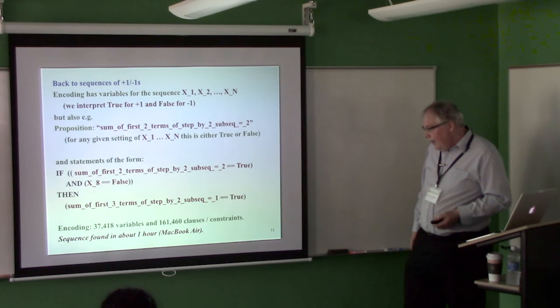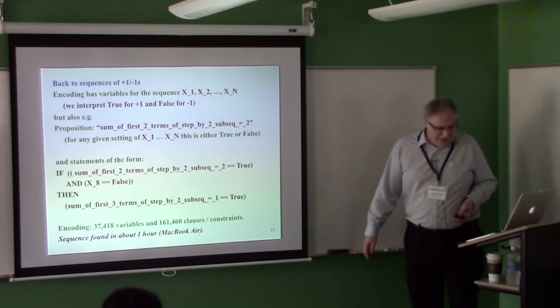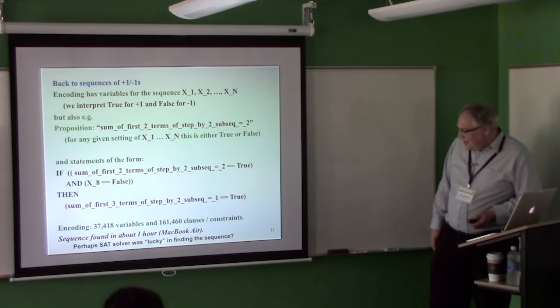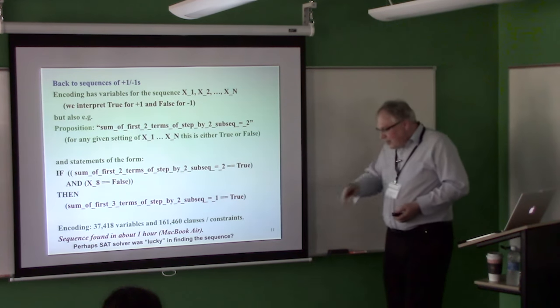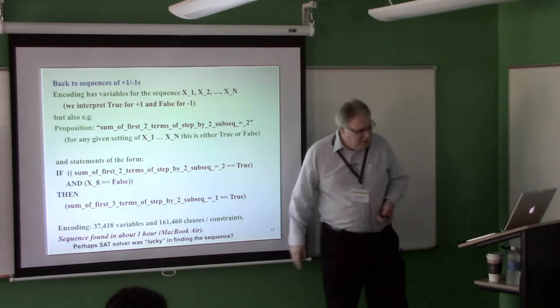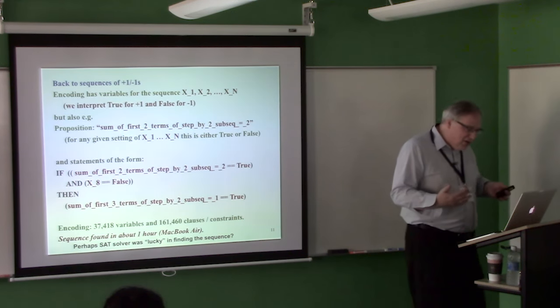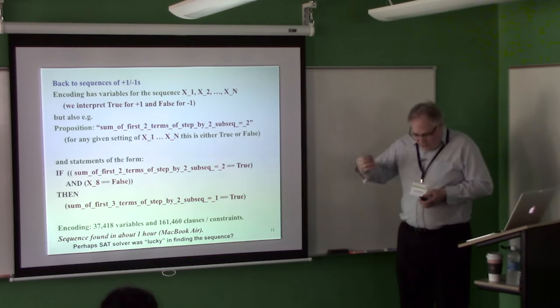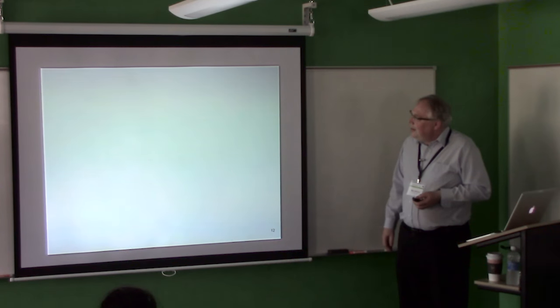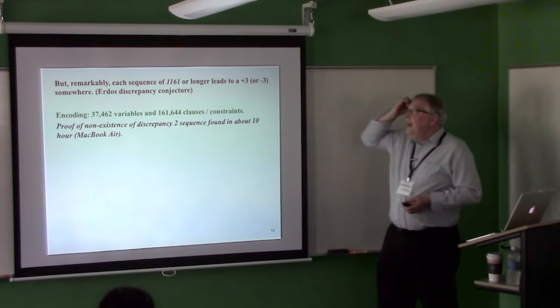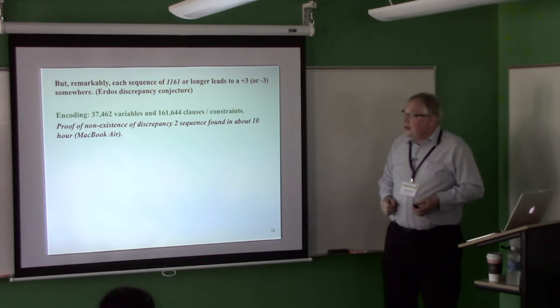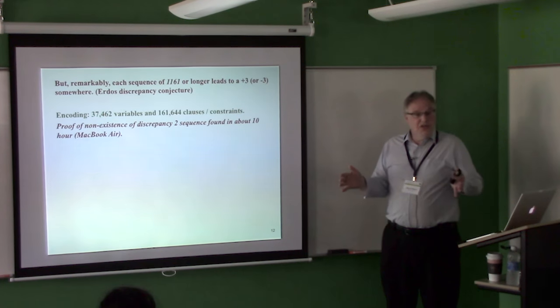And in fact, on my MacBook Air, I found the sequence in about an hour. So, the doable. So, you might actually wonder, maybe the SAT solver is just lucky in finding the sequence. And, and there's always, that worry, I guess, that maybe it's just a fluke. But we, we're going to check that. And, and I think, you know, how we know that's not the case is, if I make it one longer, and this, I think, is the real result, then I can show that encoding becomes unsatisfiable. Meaning, no matter what sequence I pick of 1161 plus ones and minus ones, at some point, one of these subsets, there will have every sequence, there will be some point where the sum goes to plus three or minus three.